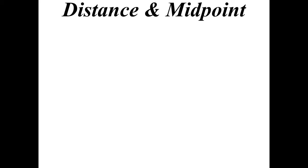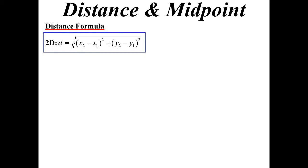All right, well how do we find things like distance and midpoint? Distance formula we know in 2D, there it is: square root of (x₂ - x₁)² plus (y₂ - y₁)².